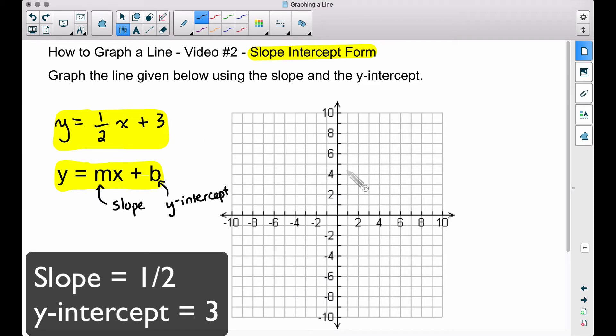Now we want to apply this slope, the letter m. That one is positive, that two is positive, so we go up one, right two. Since both of these numbers are positive, up one, right two.